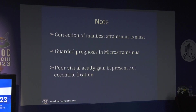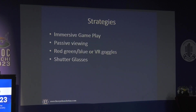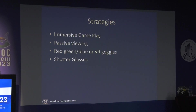The strategy can involve immersive gameplay — though kids get bored quickly so a parent needs to be present — or passive viewing of a TV screen. Dichoptic stimulus can be integrated using polaroid filters, dichoptic displays, anaglyph red-green or red-blue glasses, virtual reality glasses, or shutter glasses that alternately shut out one eye during a game or passive TV viewing.